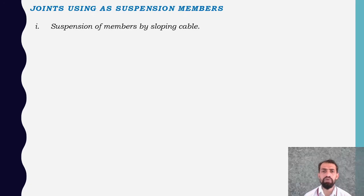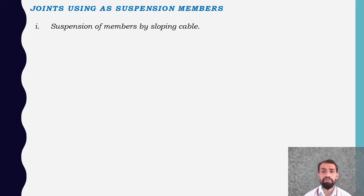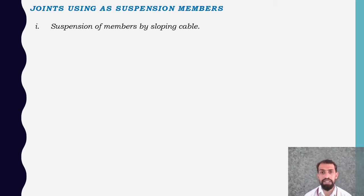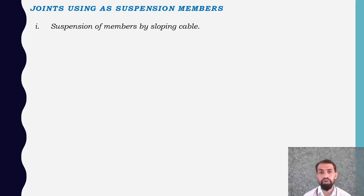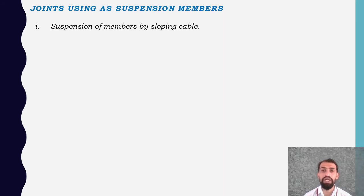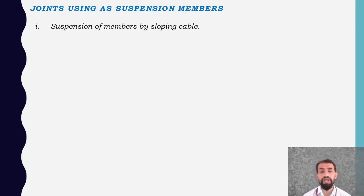We need to understand how a sloping cable can be used for suspended members. Sometimes we can see canopies which are directly suspended with cables. In structures like railway platform sheds or entrance projection canopies, the hanging members are known as suspension members. These are maintained differently from monolithic connections, which carry more dead load — if they are pre-cast, they are easily connected by cables or ropes.